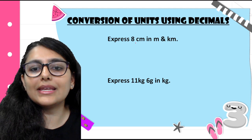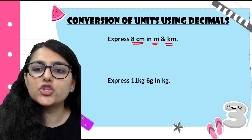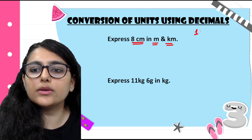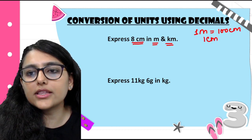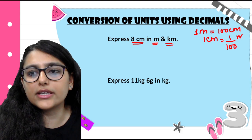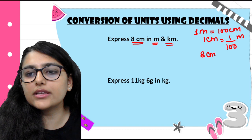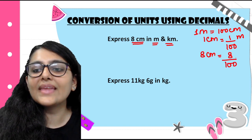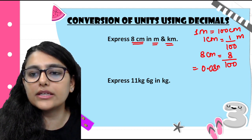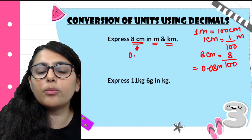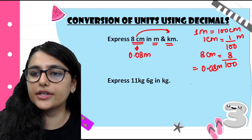Next in conversion of units using decimals: 8 cm into meter and kilometer. We know that 1 meter is equal to 100 cm, so 1 cm equals 1 upon 100 meter. When converting small to big, we always divide. So 8 cm becomes 8 upon 100, and skipping 2 digits from the right, my answer will be 0.08 meter. So 8 cm can be written as 0.08 meter.